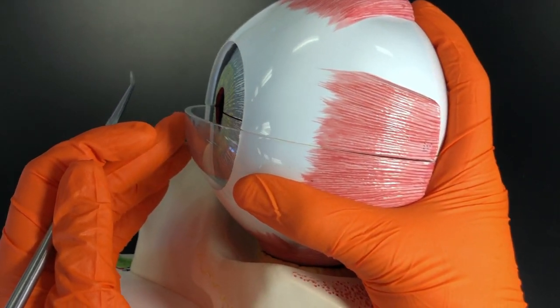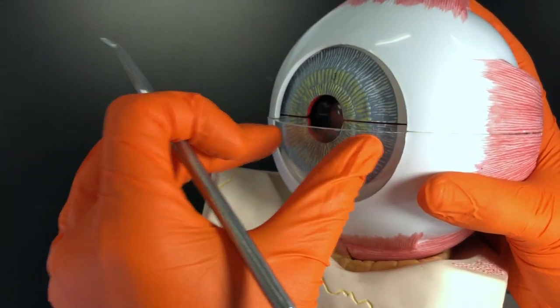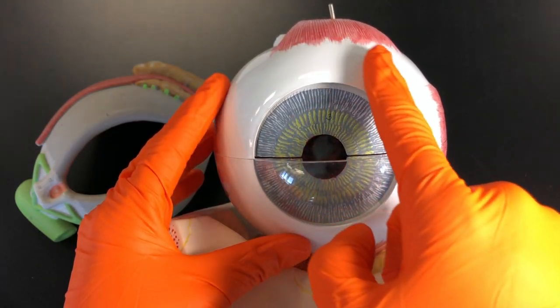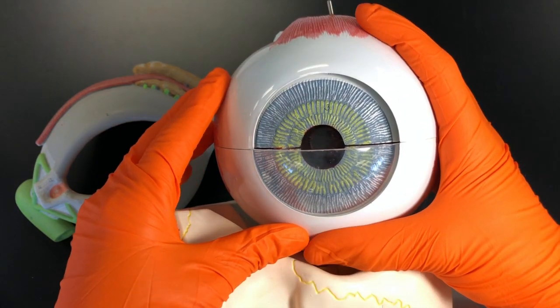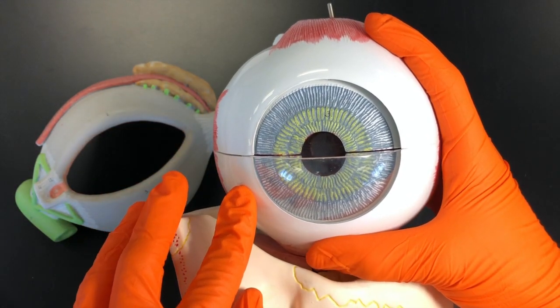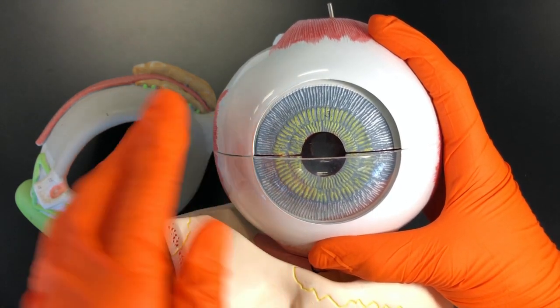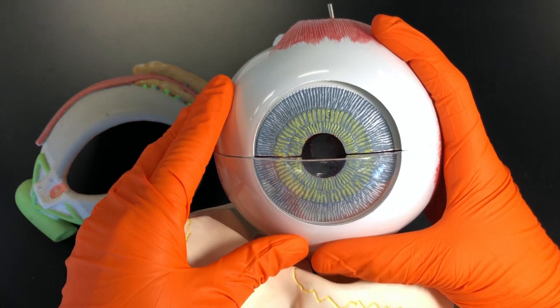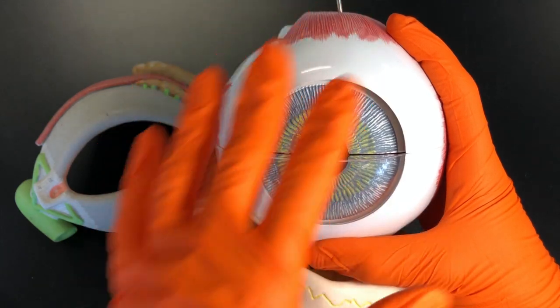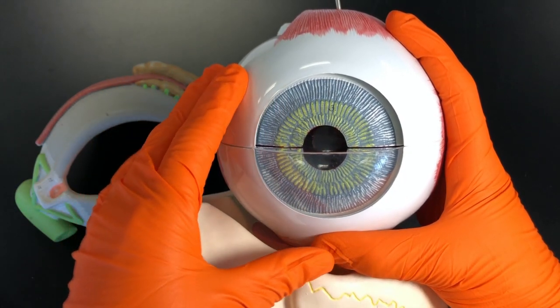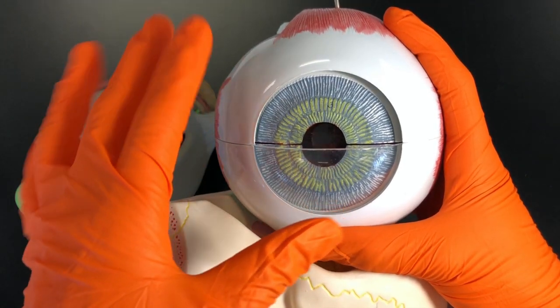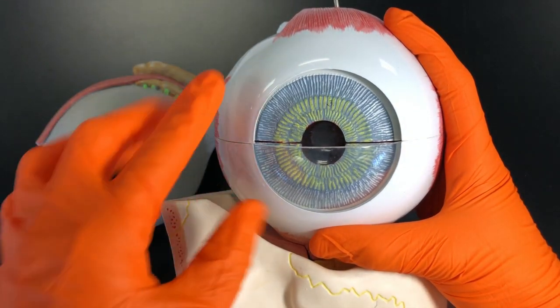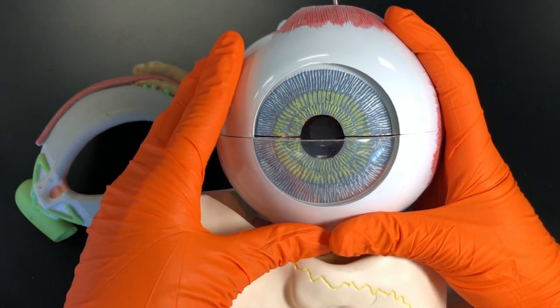The cornea is just this clear portion right here. Here on the surface of the sclera, which is the white of the eye, is a transparent tissue called the conjunctiva. It is made up of specialized columnar epithelium and contains goblet cells that secrete mucin to lubricate the eye. It also contains blood vessels that deliver oxygen and nutrients to the avascular sclera.